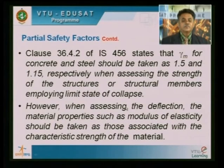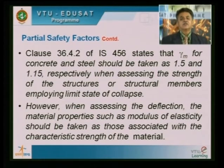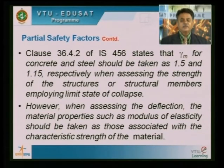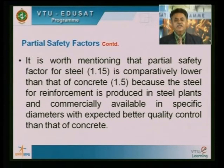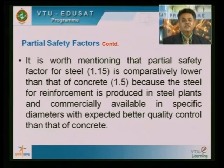Clause 36.4.2 of IS 456 states that the partial safety factor for material should be 1.5 for concrete and 1.15 for steel. So whenever I use concrete strength, I divide by 1.5; for steel, divide by 1.15. For the limit state of serviceability, use 1.0. The partial safety factor for steel is lower because steel is manufactured in a factory — quality control is better than for site-mixed concrete.